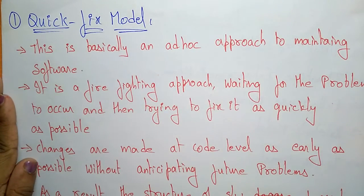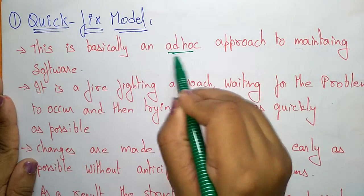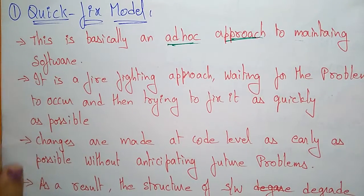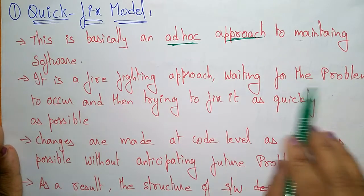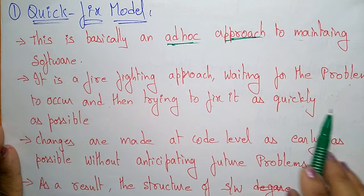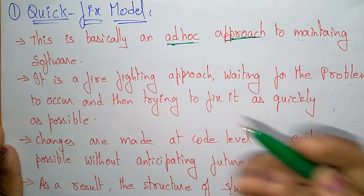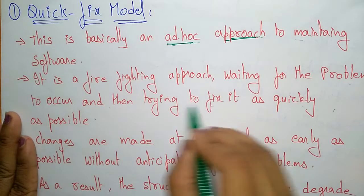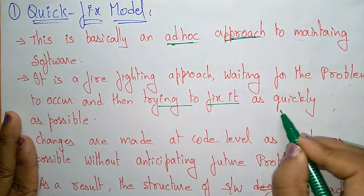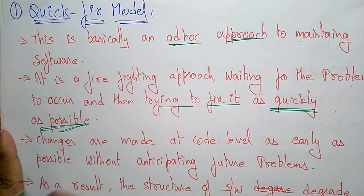The quick fix model is basically an ad hoc approach to maintaining software. It is a fire-fighting approach — waiting for the problem to occur and then trying to fix it as quickly as possible. The quick fix model is always waiting for a problem to occur, and if a problem fires, it tries to fix it as quickly as possible. That's why we call it the quick fix model.